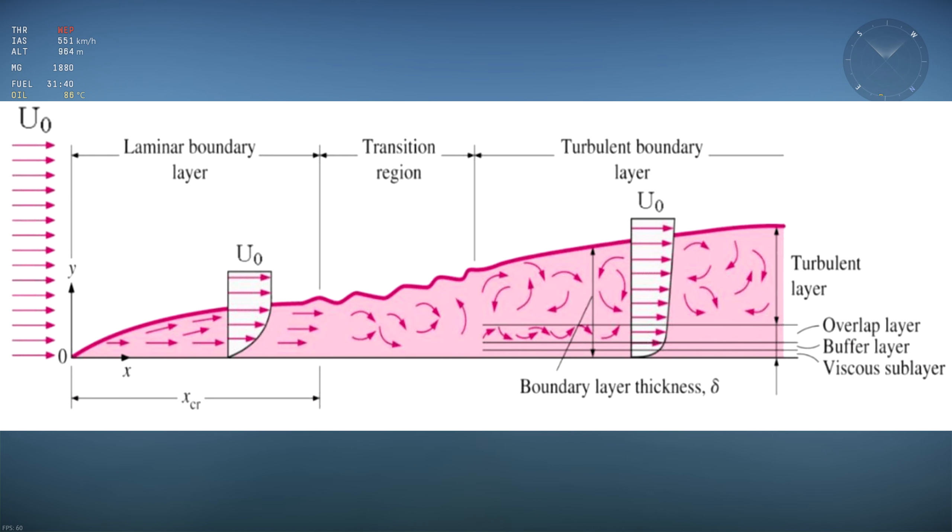Skin friction drag is proportional to how quickly speed increases as you move away from the wall. It's basically a measure of how much the air rubs against the wall, just like how the honey rubs against the knife, creating skin friction drag.